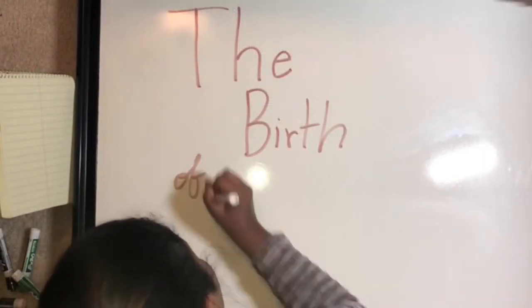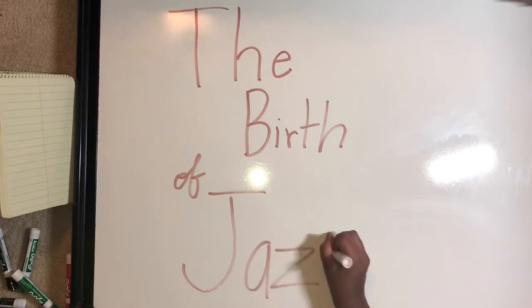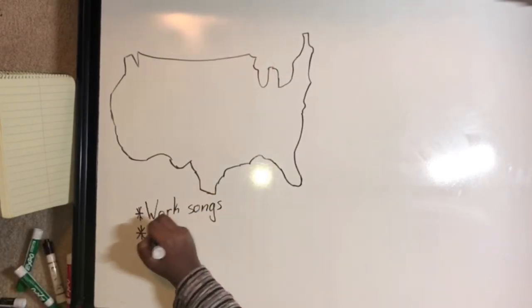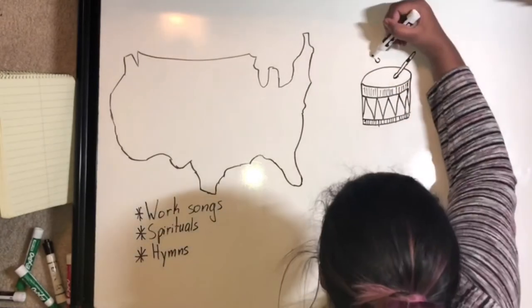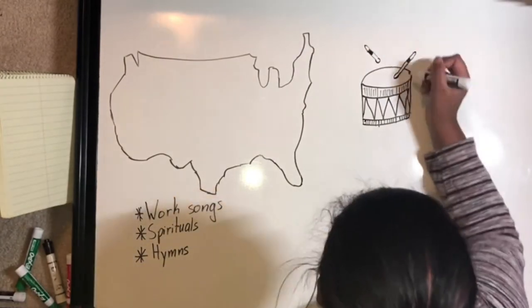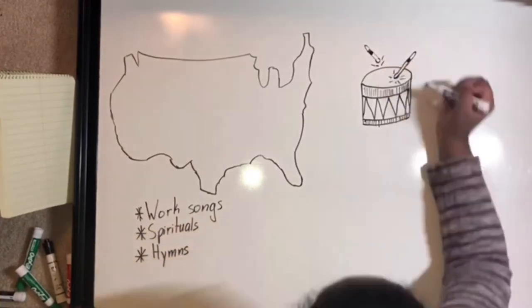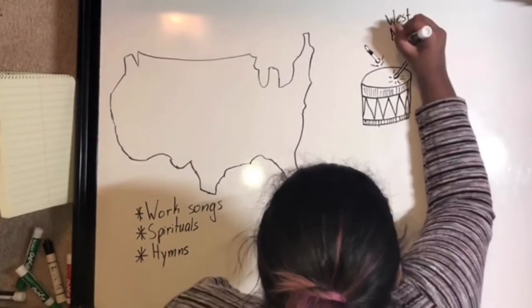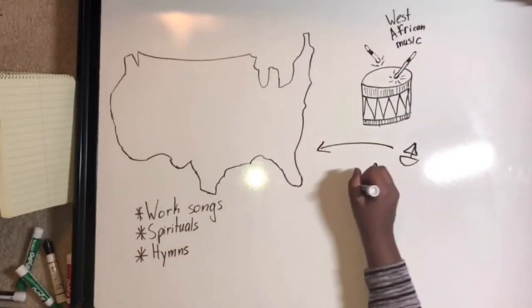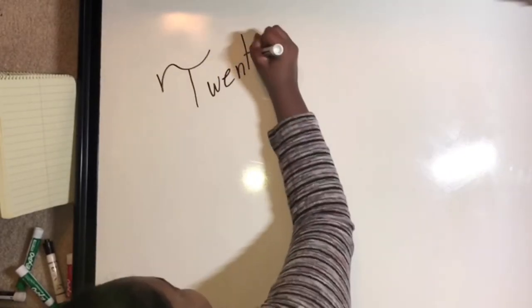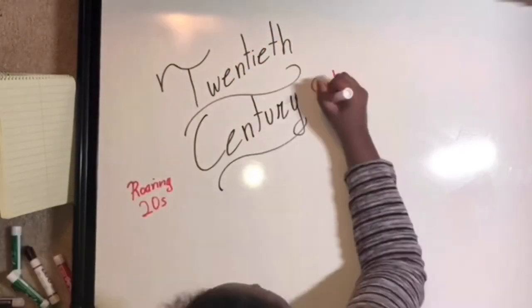Jazz music was born from the African American experience in pre-Civil War America. From the work songs and spirituals of plantation life, the legacy of jazz was born. The elements that make jazz unique mainly derive from West African music brought to North America by slaves and preserved through plantation culture in the American South. Throughout the 20th century, many different styles of jazz emerged and evolved.